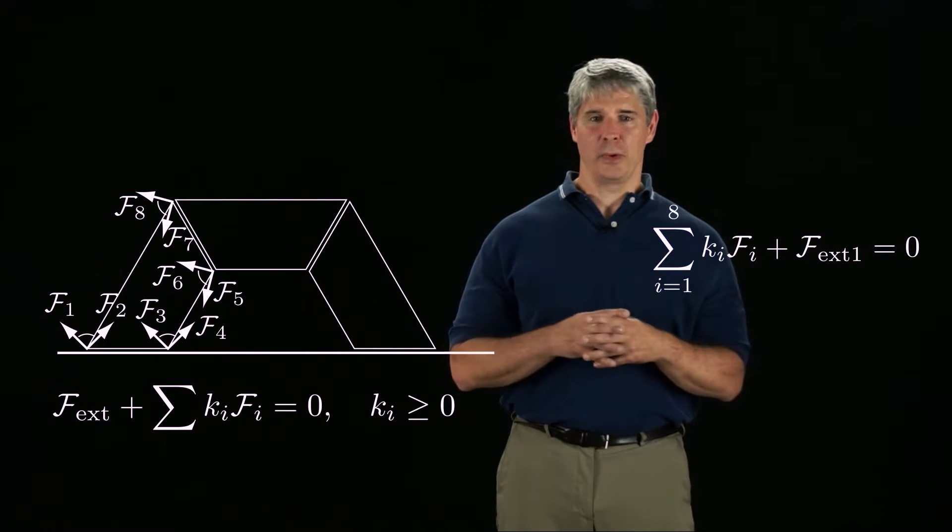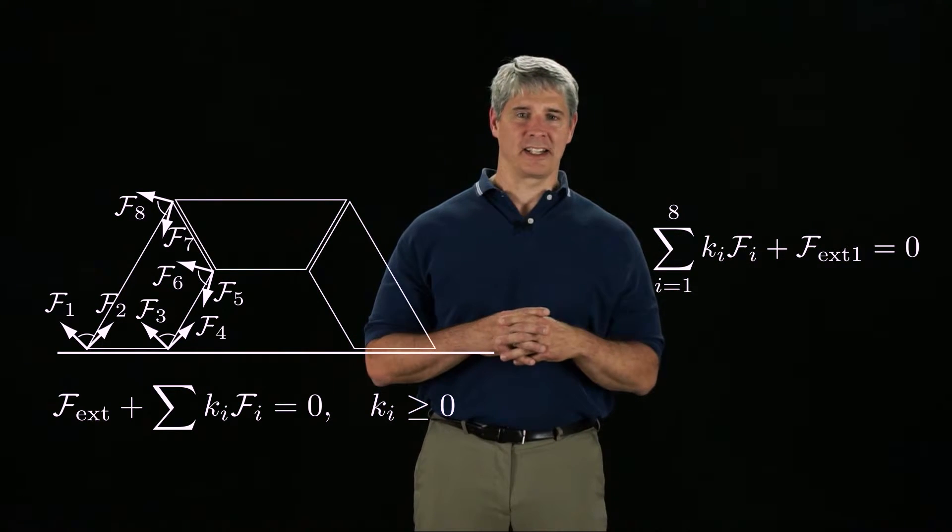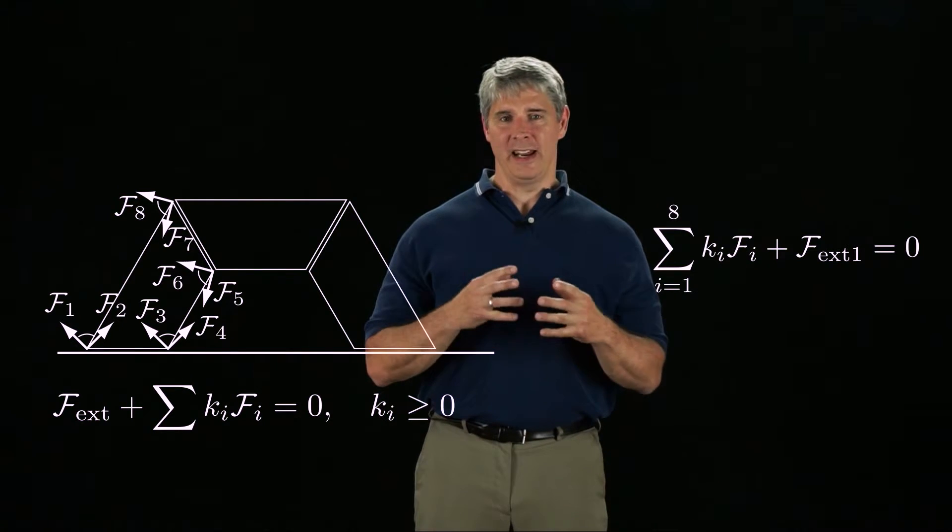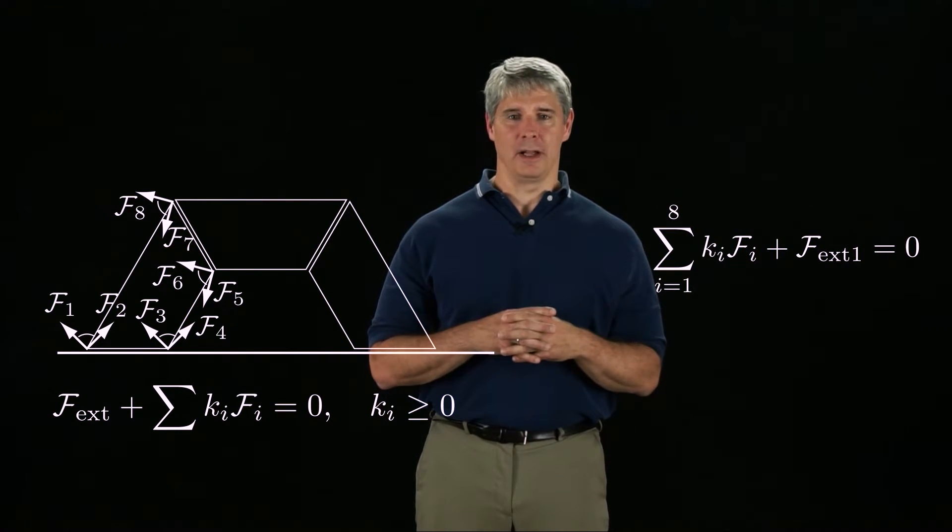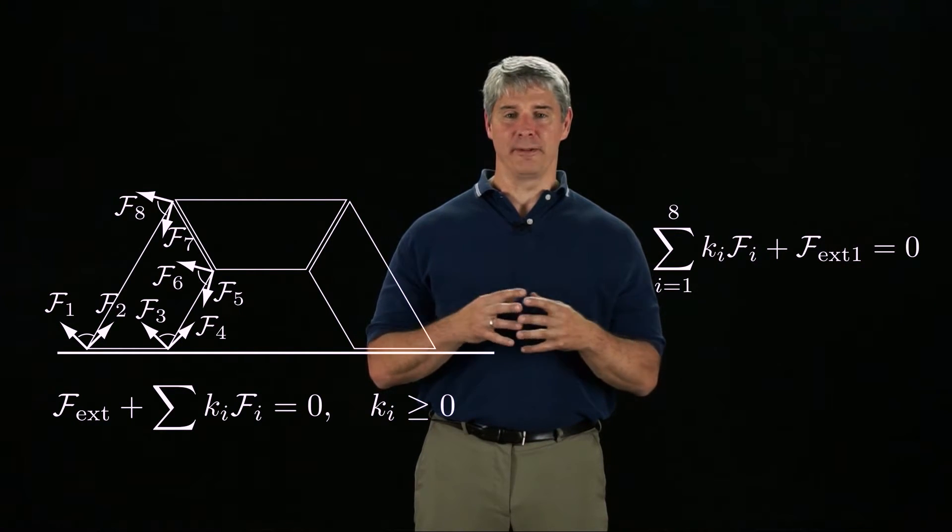For the left block, we can write the static balance equation as shown here. There are eight friction cone edges acting on the left block, f1 through f4 from the table, and f5 through f8 from the top block. The total contact wrench is in the positive span of these eight wrenches.